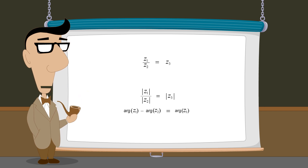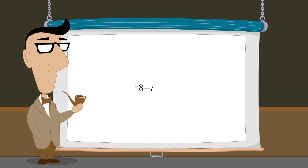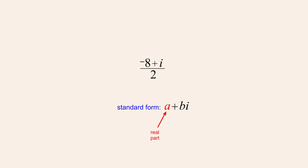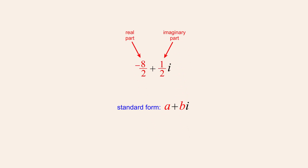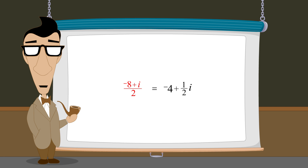Now that we know how the lengths and angles of the vectors in a complex division are related, let's try a simple division example dividing the complex number negative eight plus i by two. Even though this fraction is a valid representation of the quotient, we would like it to be written as a complex number in standard form. Standard form complex numbers are written as a plus bi, where a and b are real numbers called the real part and the imaginary part. In this example, the quotient is easily separated into its real and imaginary parts. Once both parts have been simplified, the result of this division is a complex number in standard form. So dividing the complex number negative eight plus i by two produces the quotient negative four plus one-half i.